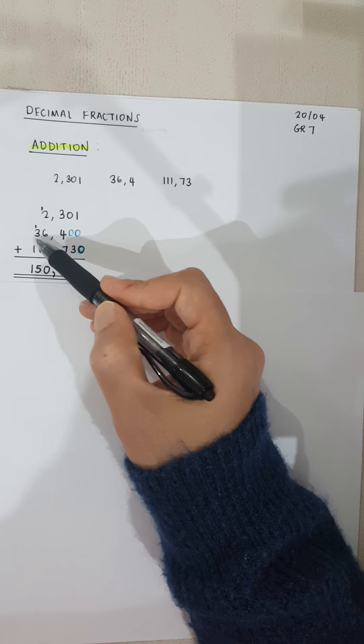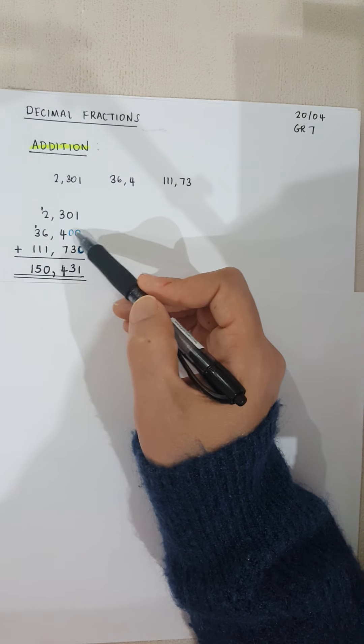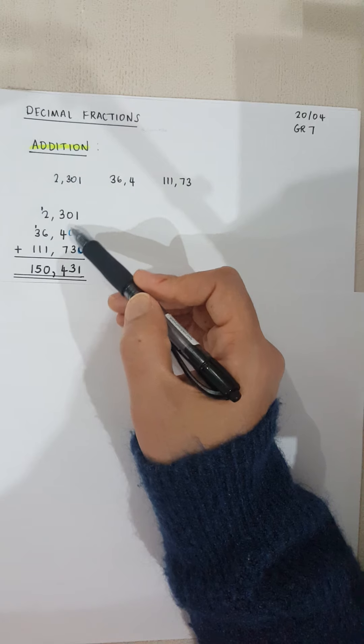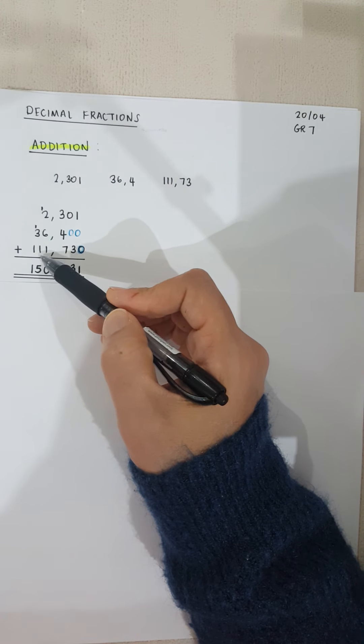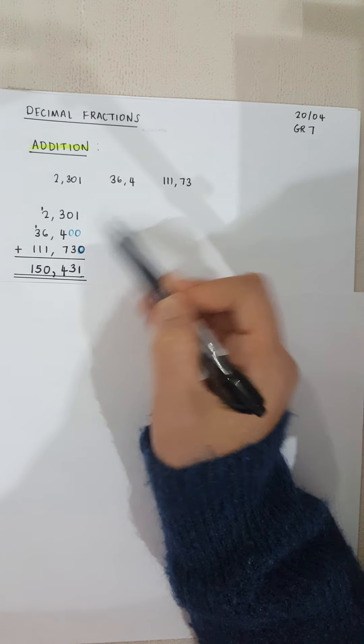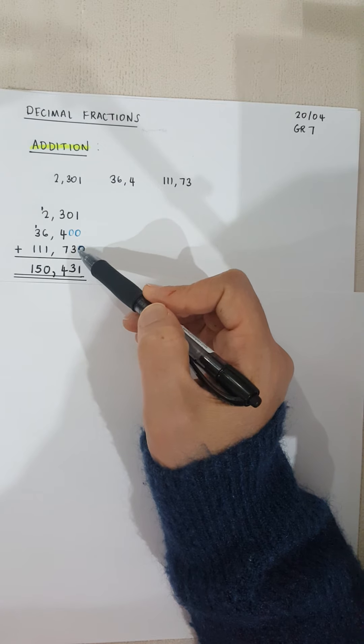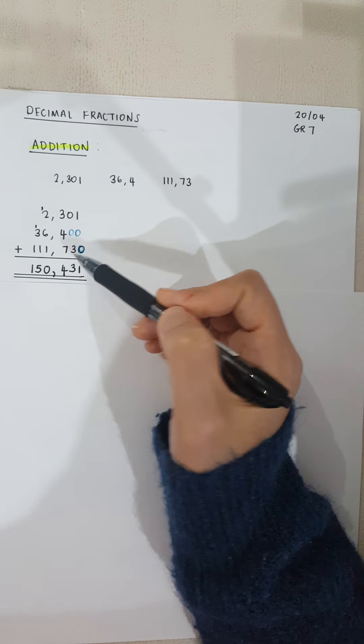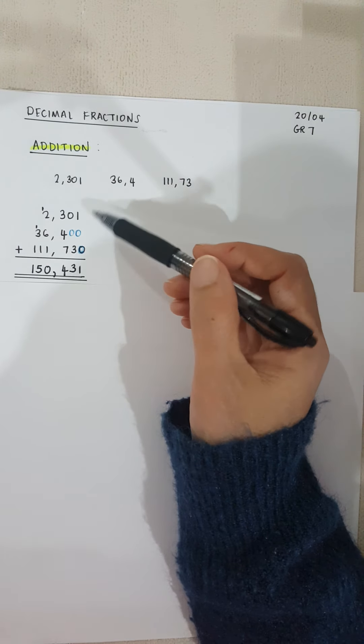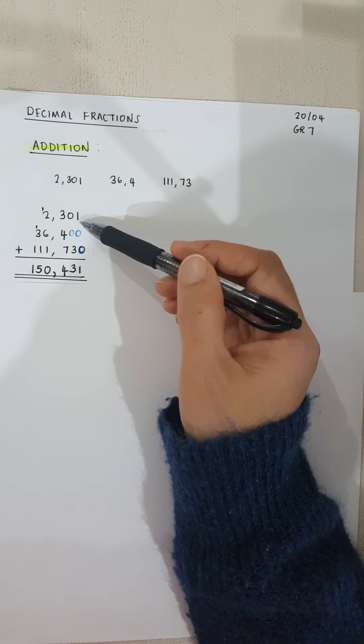I've added two extra zeros which doesn't change my number but it makes my adding easier for me. I need to put it in line with that. Then I've got 111.73 from there, and then I've added another extra zero. I just start adding as normal.